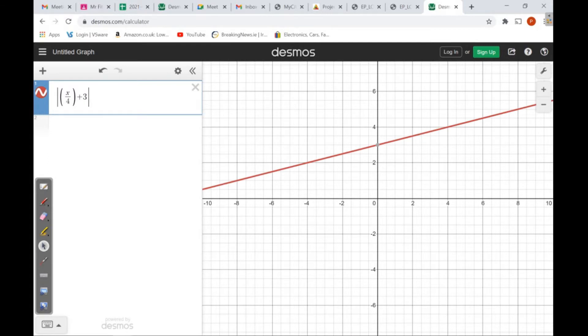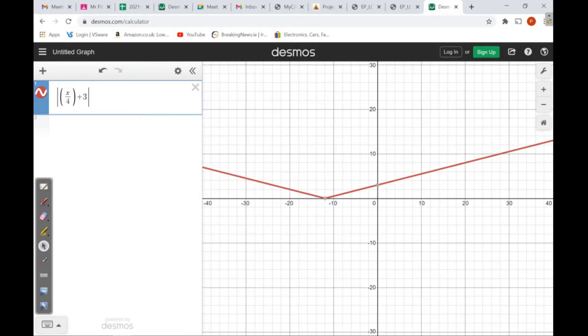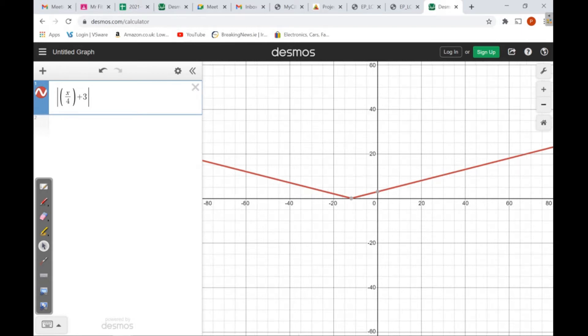If I zoom right out, I can see it has this kink at what looks to be (-12, 0). I can pick the points around that to graph it, and it gives me a good idea of what it looks like. It's a really handy tool.